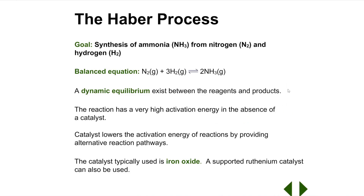The Haber process produces ammonia from elemental nitrogen, N2, and hydrogen, H2. The formula of ammonia is NH3. Ammonia is used in a variety of ways: it is used as a cleaning agent, it is also a coolant in some air conditioners, and ammonia is also used to manufacture nitrogen fertilisers.